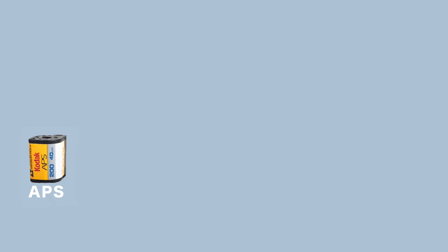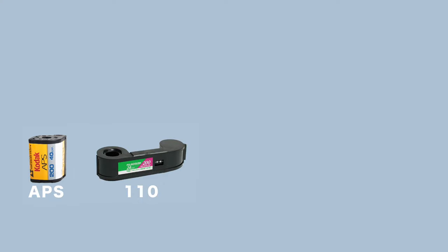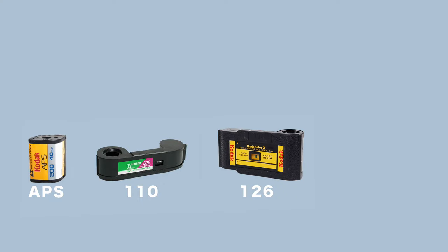Since you might have a camera that doesn't use any of the three sizes I mentioned, let me quickly mention the sizes you can still find: APS, 110, 126, 127, and 620.